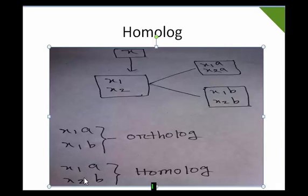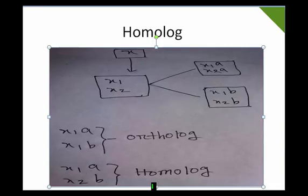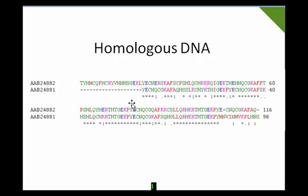A homolog is ancestrically conserved — their ancestral sequences are conserved with each other, and that is called homolog. Finally, homologous genes or homologous proteins are identified through star markings in protein sequence alignments of two different species, which help us discuss the homologous relationship among the proteins.